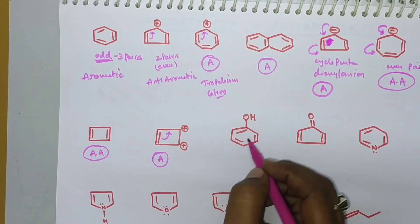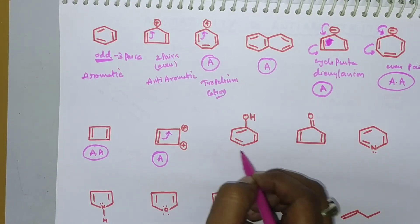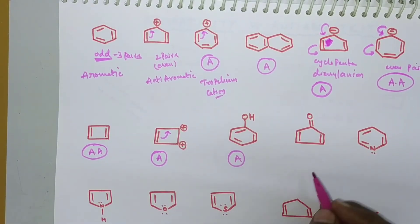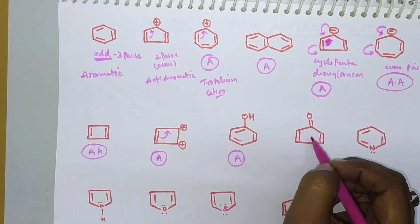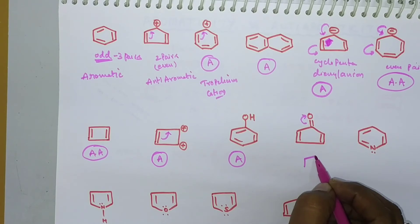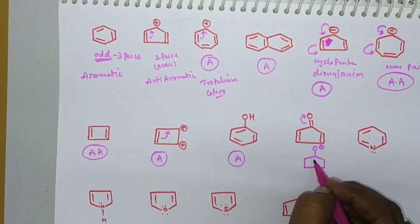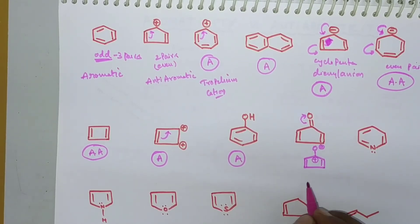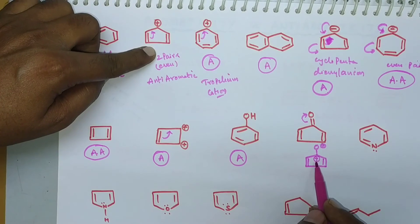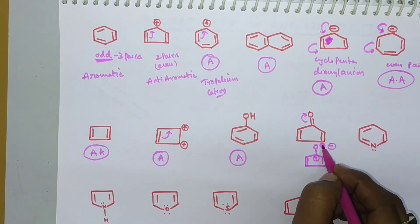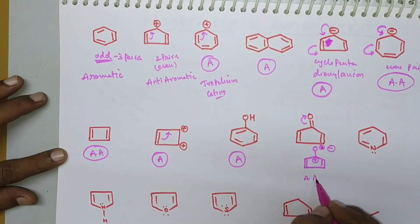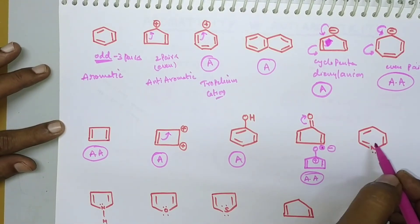Phenol consists of alternate double bonds with three π bonds — three odd pairs — so it is aromatic. However, when considering a resonance structure where electrons shift toward oxygen, the O becomes negative, a carbon becomes positive, and conjugation of the positive charge with the remaining two π bond pairs gives an even number, making that resonance form anti-aromatic.